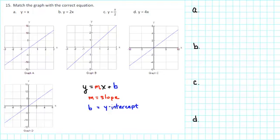Match the graph with the correct equation. A, y equals x; B, y equals 2x; C, y equals x over 2; and D, y is equal to 4x.